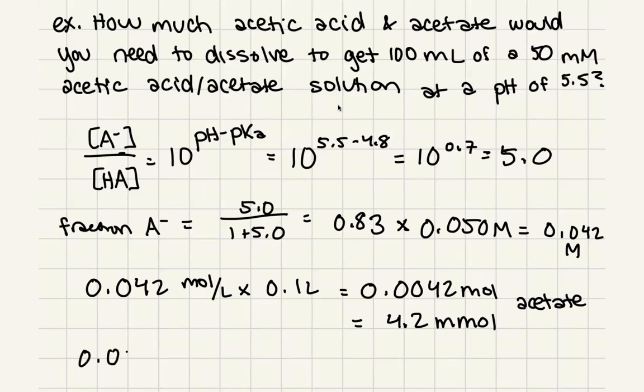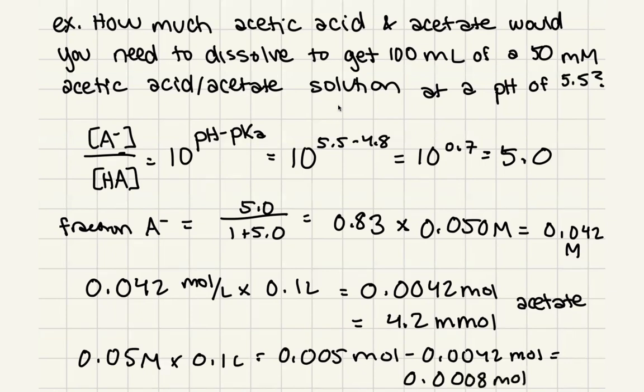So what we could do is basically say we have 0.05 molar times 0.1 liter will give us the total moles. We'll get that we have 0.005 moles. And then we know that we have 0.0042 moles of our acetate. So what's left over is going to be 0.0008 moles of our acetic acid.